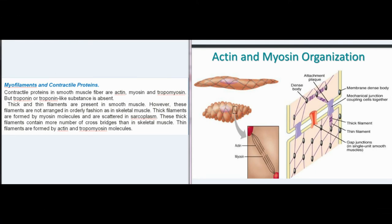Contractile proteins in smooth muscle fiber are actin, myosin, and tropomyosin. But troponin or troponin-like substance is absent. Thick and thin filaments are present in smooth muscle; however, these filaments are not arranged in an orderly fashion as in skeletal muscle. Thick filaments are formed by myosin molecules and are scattered in sarcoplasm. These thick filaments contain more cross bridges than in skeletal muscle.